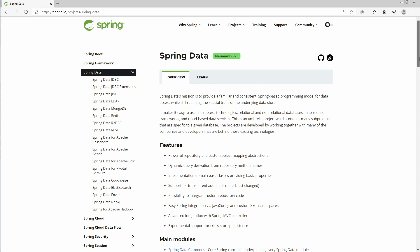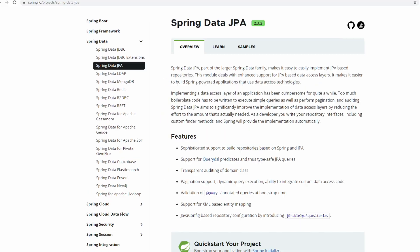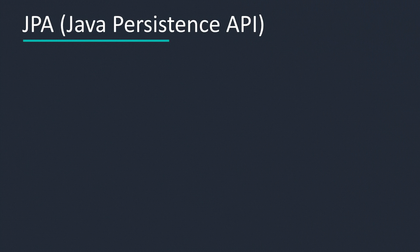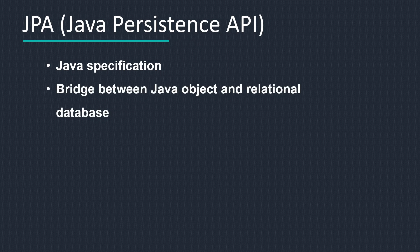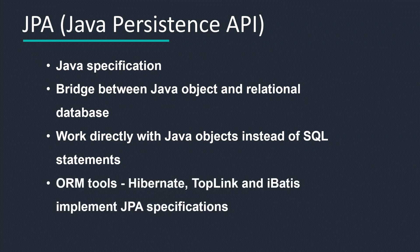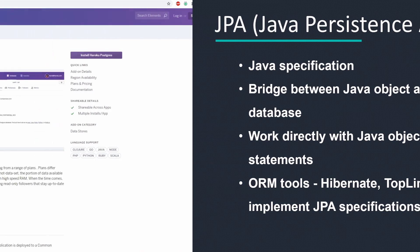Spring Data is a Spring project that lets us do exactly that with minimum fuss. Spring Data JPA, a part of the larger Spring Data family, makes it easier to implement the data access layer for our application. JPA, or Java Persistence API, is a Java specification used to persist data between Java objects and relational databases. JPA acts as a bridge between object-oriented domain models and relational database systems, letting us work directly with Java objects instead of SQL commands. ORM tools like Hibernate provide the implementation for these JPA specifications.